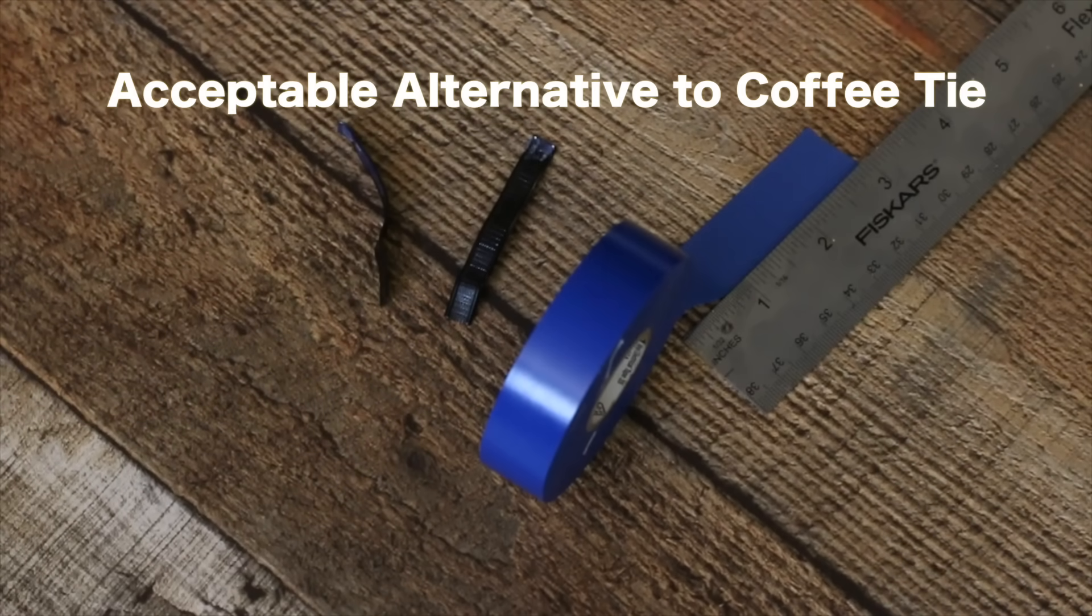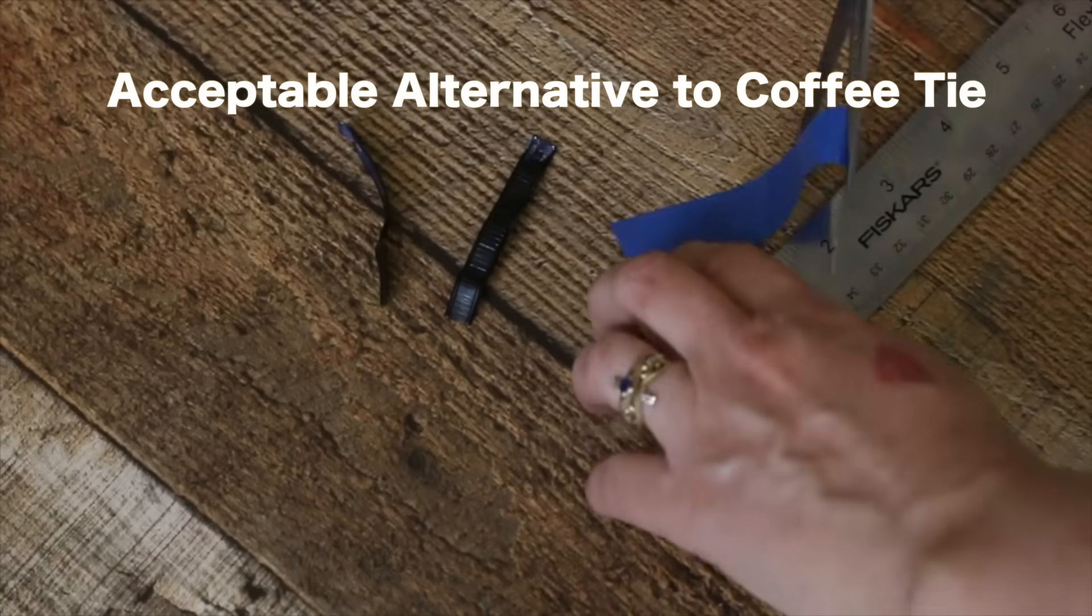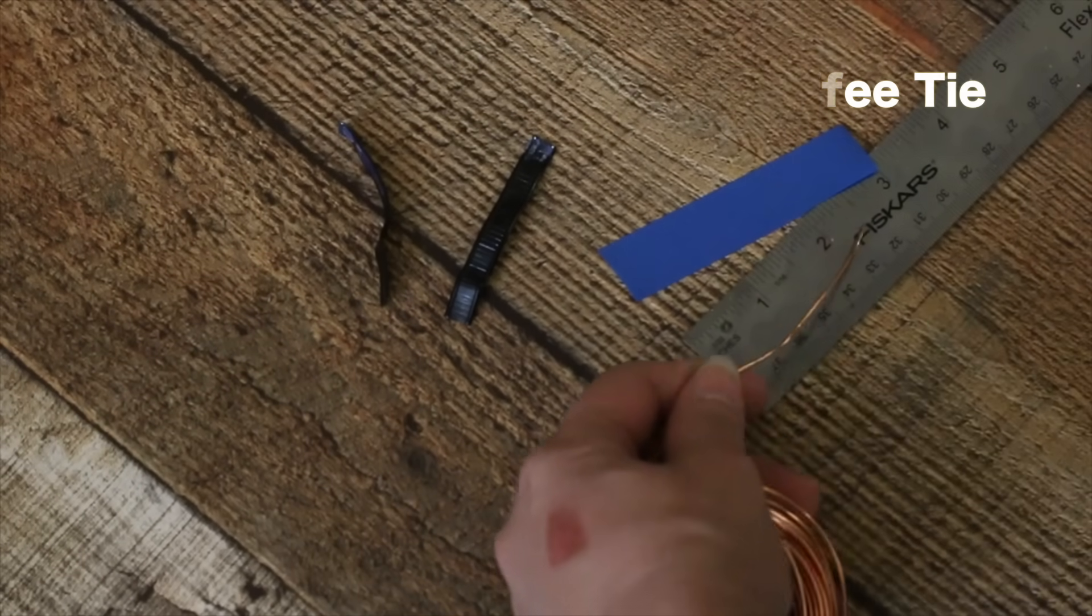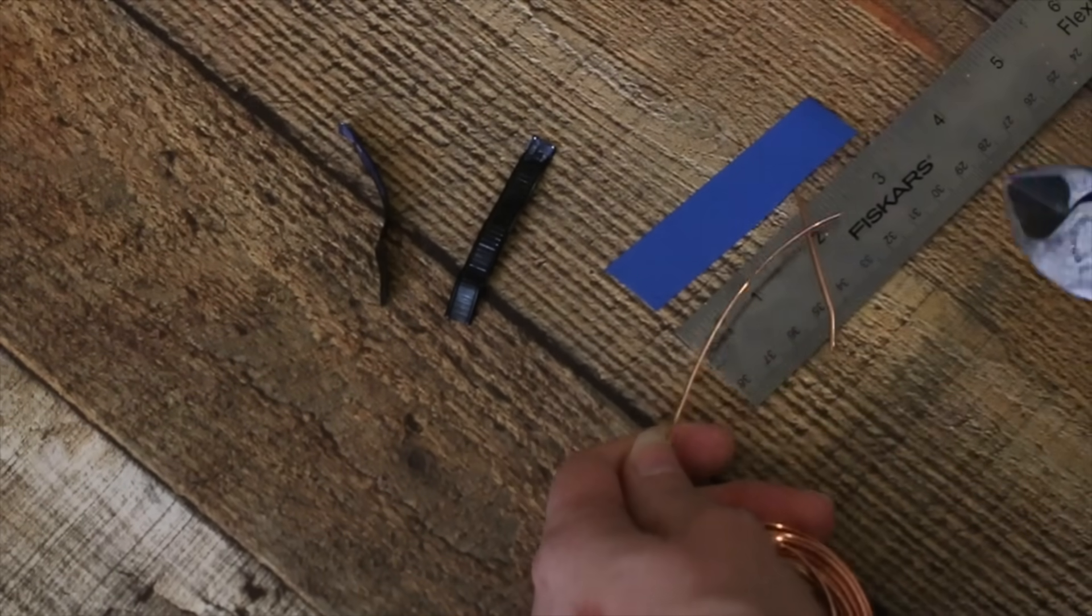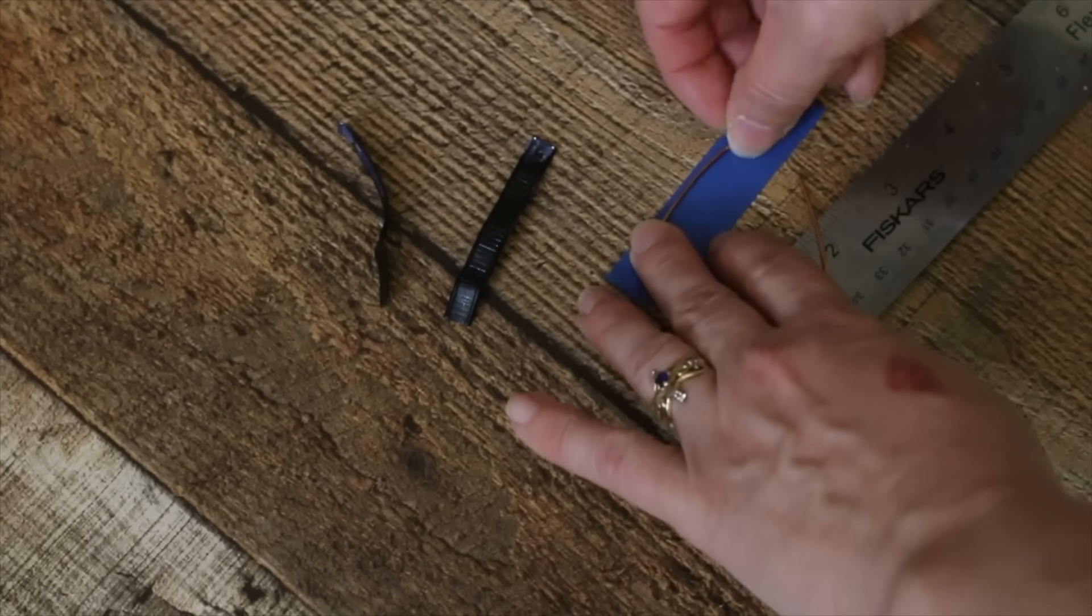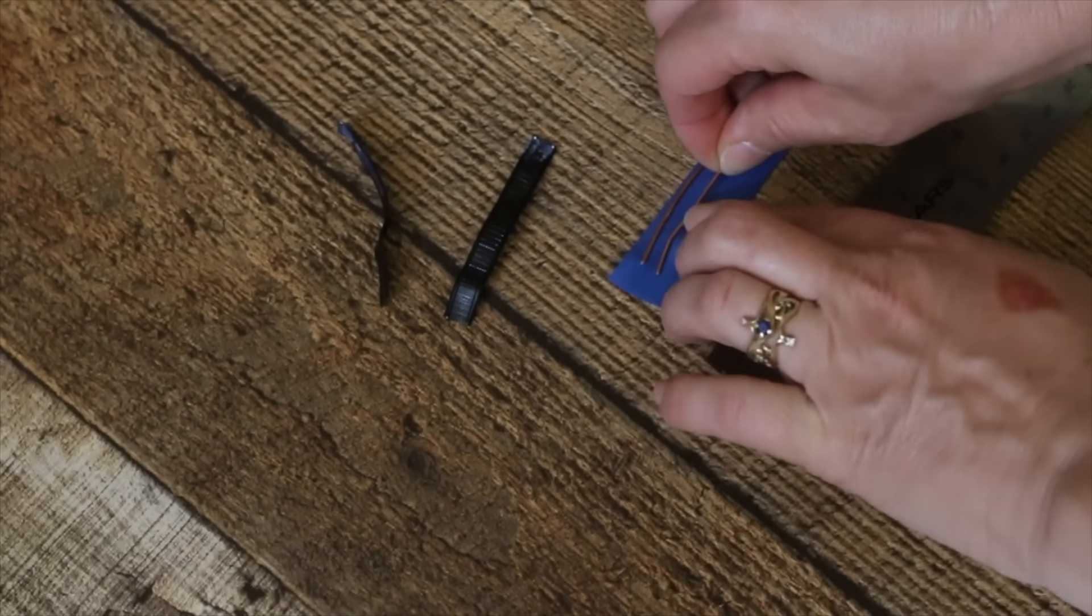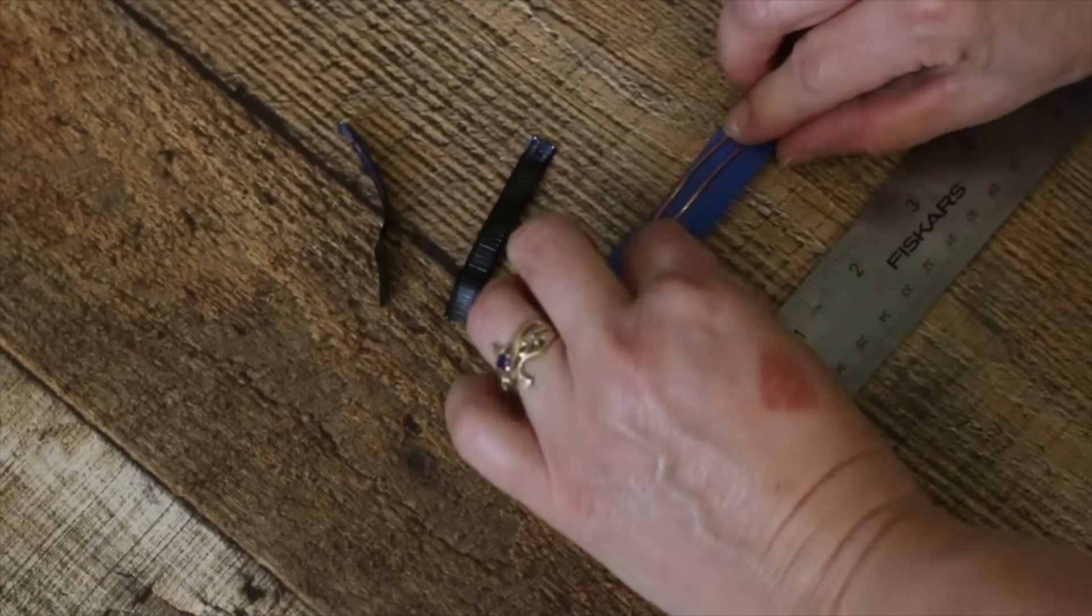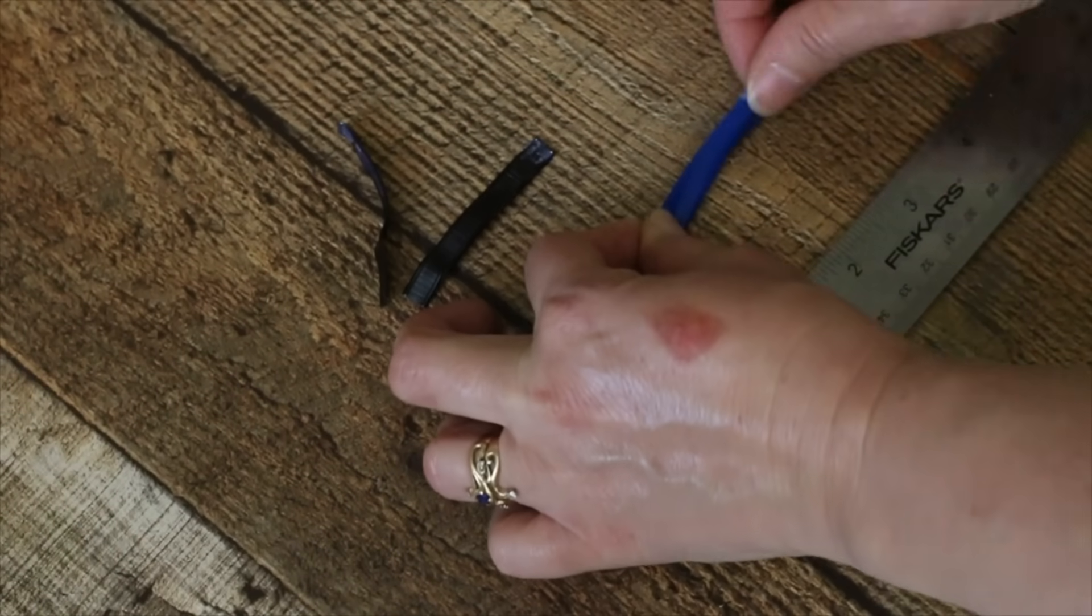But if you don't have coffee bags or you need more nose clips, I offer a close second to the coffee ties. Cut a piece of electrical tape to 3 inches. Then cut two pieces of 18 gauge craft wire or paper clips to 2 1/2 inches. Lay them on half the tape and fold over the tape to seal it to itself. Then trim off the excess tape, making sure to leave some tape on the ends to cover the wire.